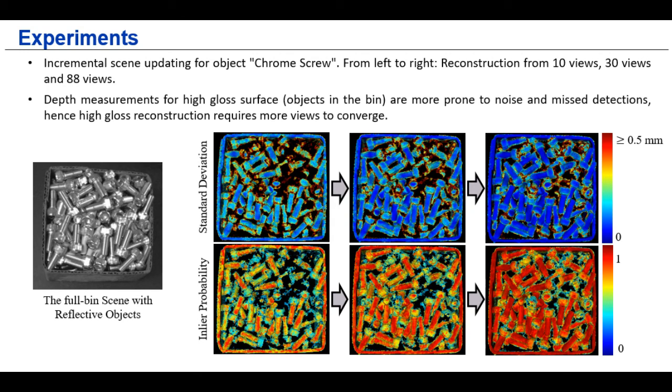And for our experiments, we use the collected ROBI dataset to evaluate our depth fusion. And here, we first visualize the uncertainty propagation in terms of inlier probability and the standard deviations. And we can see that the reconstructions are gradually getting converged with the increasing number of viewpoints. But compared with the matte area, like the paper box, the depth on the shiny surfaces has a slow convergence.